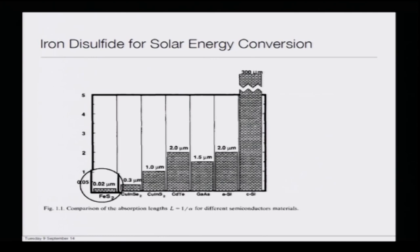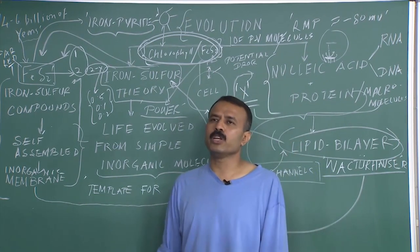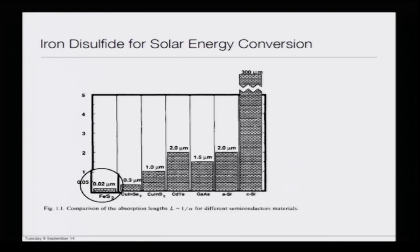If you look at the solar energy conversion ability of FeS₂, this graph compares how much relative material you need to produce a given amount of energy output. Comparing FeS₂ with copper indium, crystalline silicon (c-Si), amorphous silicon (a-Si), gallium arsenide (GaAs), and cadmium telluride (CdTe) — you will see that comparatively, for producing the same amount of output using these photovoltaic materials, you need the minimum amount with iron pyrite. This is its phenomenal ability to transform sunlight into photovoltaic energy.